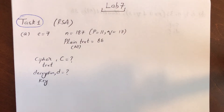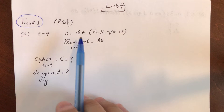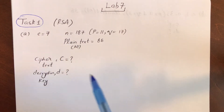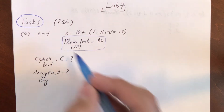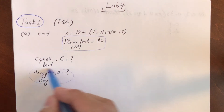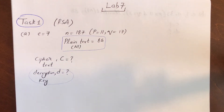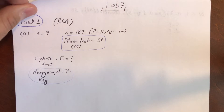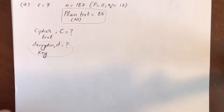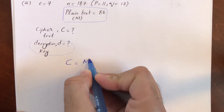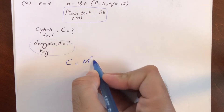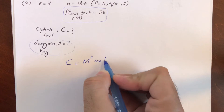Task 1 is a small numerical. By using RSA, what we have to do is we need to find the ciphertext of this particular plaintext, and then we also need to calculate the decryption key. In order to calculate the ciphertext, the formula is very simple. At the sender side, the formula we use is c equal to m, which is plaintext or message, raised to power e mod n.